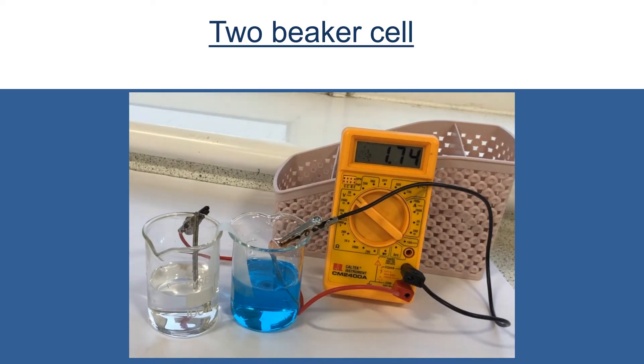On the right hand side beaker we've got copper sulfate solution, that's the blue one, with a piece of copper metal and again connected to our multimeter. We're recording the voltage produced in this cell.